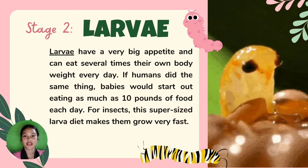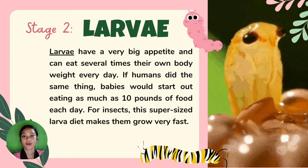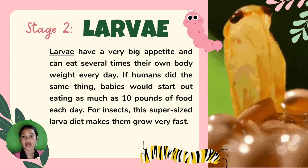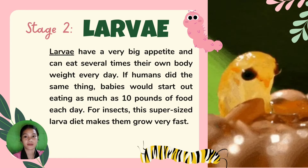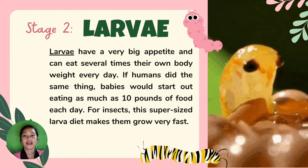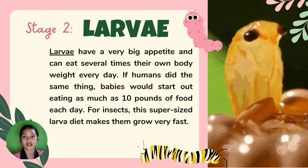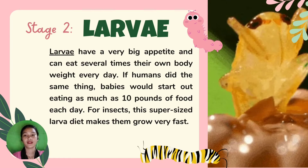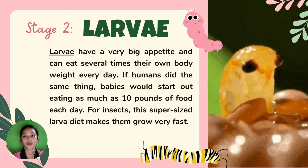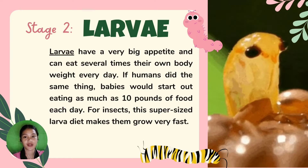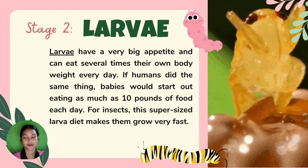The second stage is larvae. The larvae eat their way out of the egg and immediately start feeding on the leaves of the host plant. As they grow, they shed their skin several times. A fully grown caterpillar can be over 100 times larger than when it emerged from its egg.